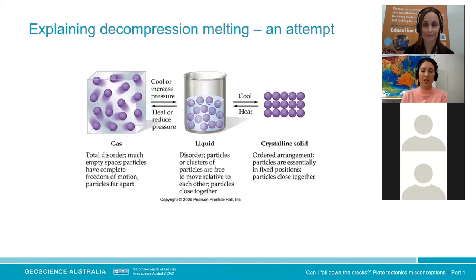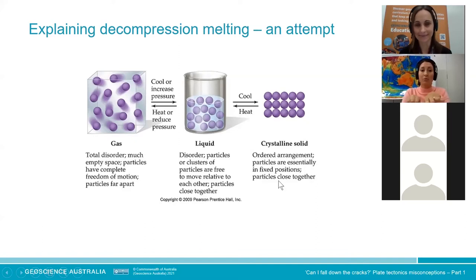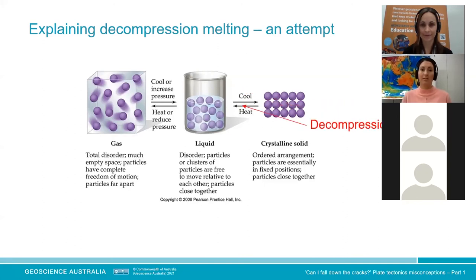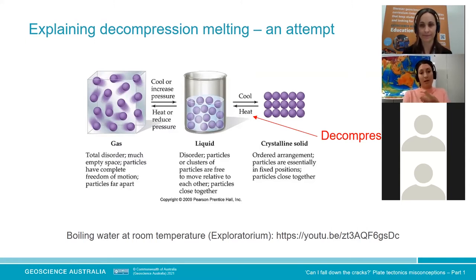The way to think about it is to go back to your states of matter. If you increase pressure or reduce temperature on a gas, you can form a liquid; add more pressure and cool further, you get a solid. At a divergent plate boundary, the lithospheric material moves away from each other, taking pressure off the material below — going from solid to liquid without a temperature change. The material becomes liquid and more buoyant and can well up. The answer: decompression melting. You can try a similar experiment from the Exploratorium where you boil water in a syringe by pulling back the barrel and reducing pressure.